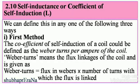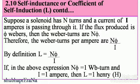First method: the coefficient of self-induction of a coil can be defined as the Weber turns per ampere of the coil. Weber turns means the flux linkages of the coil, given as flux in Webers multiplied by the number of turns with which the flux is linked. Suppose a solenoid has N turns and a current of I amperes passing through it. If the flux produced is φ Webers, then the Weber turns are N×φ, and the Weber turns per ampere are Nφ/I.